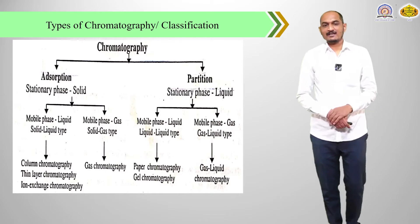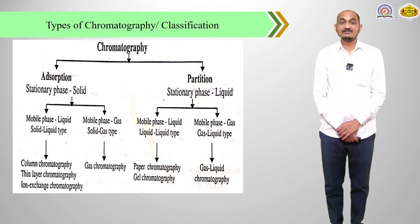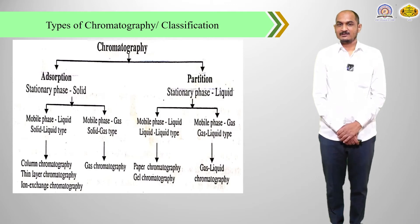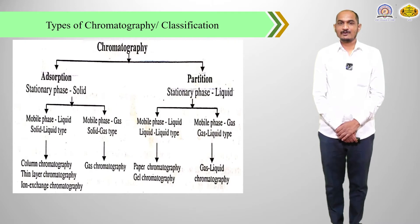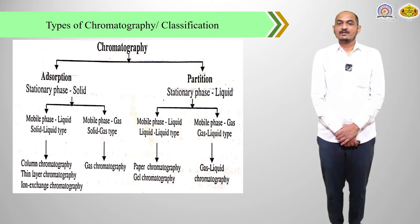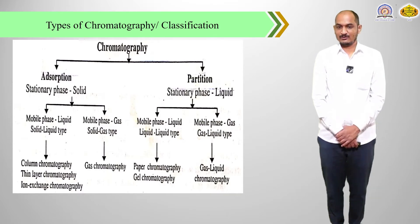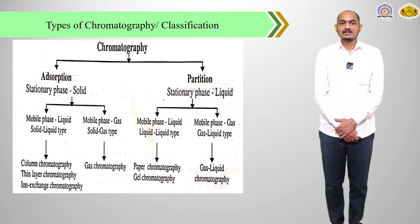The second class of chromatography is the partition type. In partition chromatography, the stationary phase is a liquid. When the mobile phase is also a liquid, that is liquid-liquid type chromatography — examples are paper chromatography and gel chromatography. When the stationary phase is liquid and the mobile phase is gas, that is gas-liquid type chromatography.